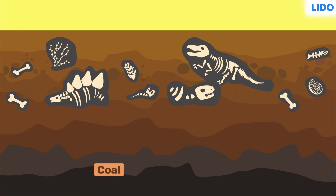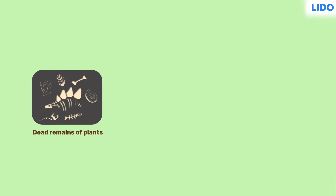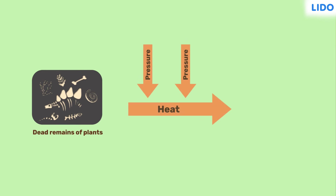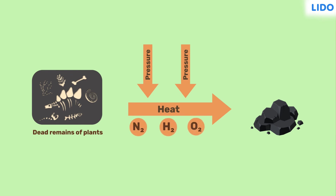This process of conversion of dead remains of plants into coal, in the presence of heat and pressure and absence of air, is called carbonization. It's called carbonization because all the elements like nitrogen, hydrogen, and oxygen present inside the dead remains are lost. Only carbon is left behind.